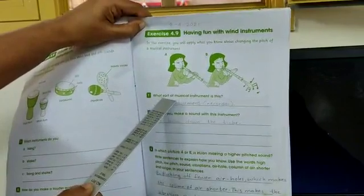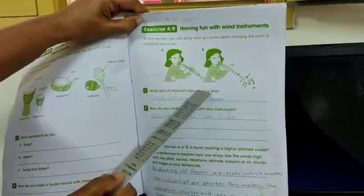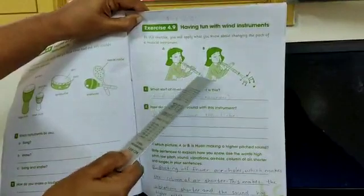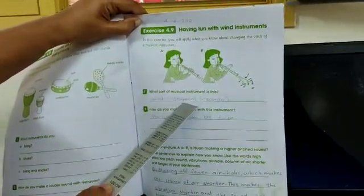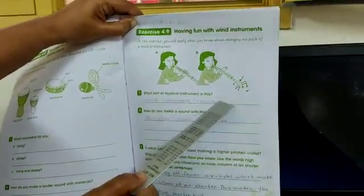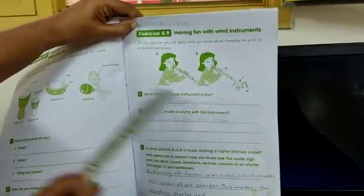What sort of musical instrument is this? What is the name of this? It is a wind instrument and its name is recorder.